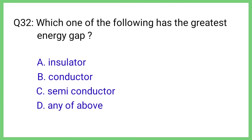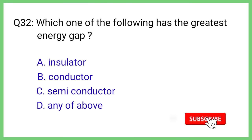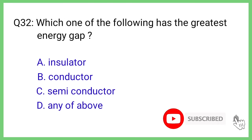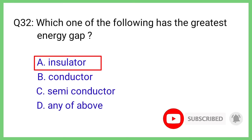Question No. 32. Which one of the following has the greatest energy gap? The correct answer is Option A. Insulator.